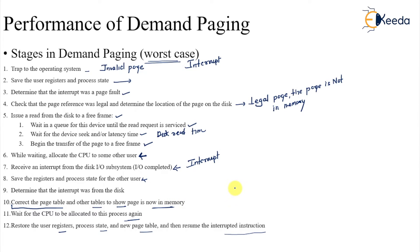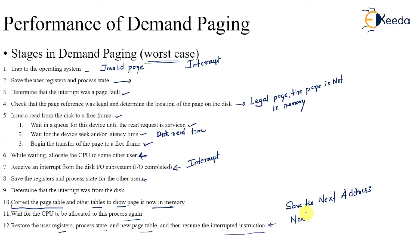Resume the interrupted instruction — don't get confused with this statement. It saves the next address, so although it is written as 'resume the interrupted instruction,' it actually saves the next address and will start execution from the next instruction, completing that next instruction successfully.